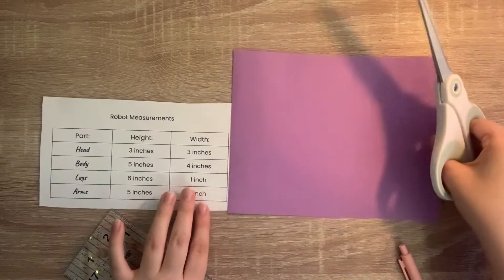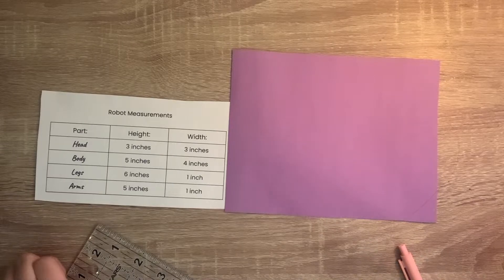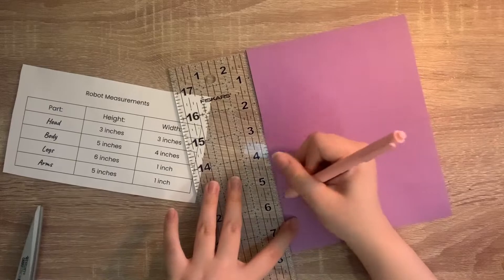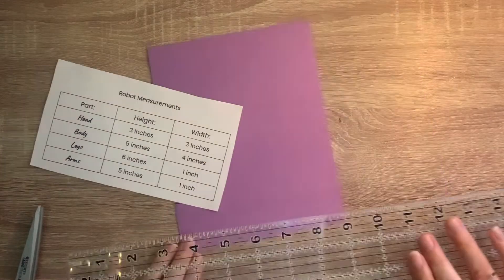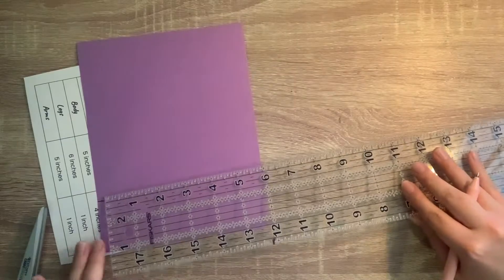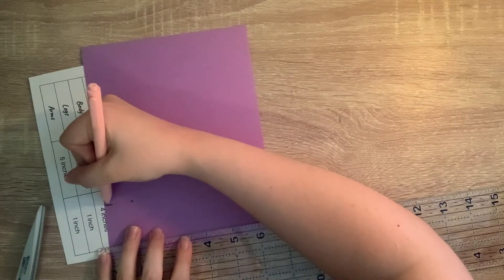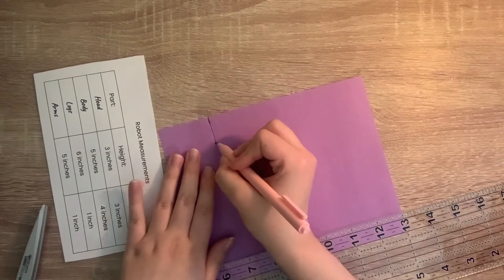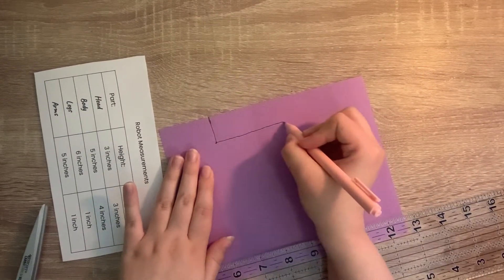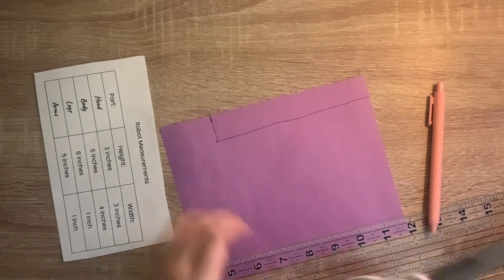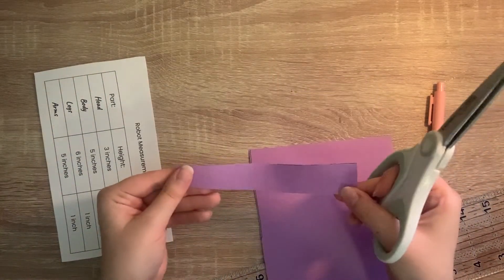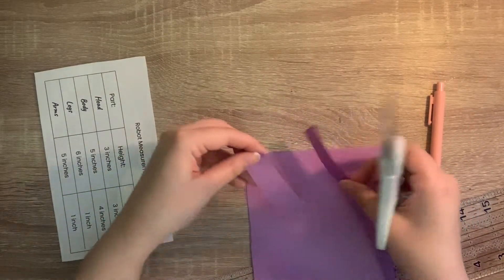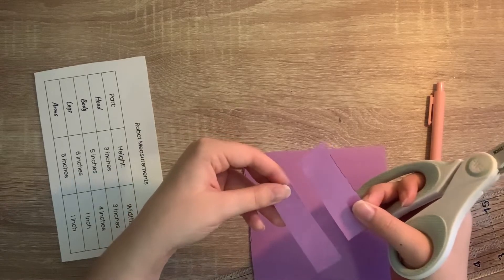Next, we are going to create the legs. It says to do 6 inches tall and 1 inch wide. We're going to put it at the end of the paper and mark at 6 inches. Now we are going to use the ruler to do 1 inch wide. Now we're going to connect these two marks and also draw a line to the very start of the paper. Next, go ahead and cut this out. Now this is one long sheet. To give us two legs, we are going to cut it in half like this. Set these aside with the rest of your pieces.